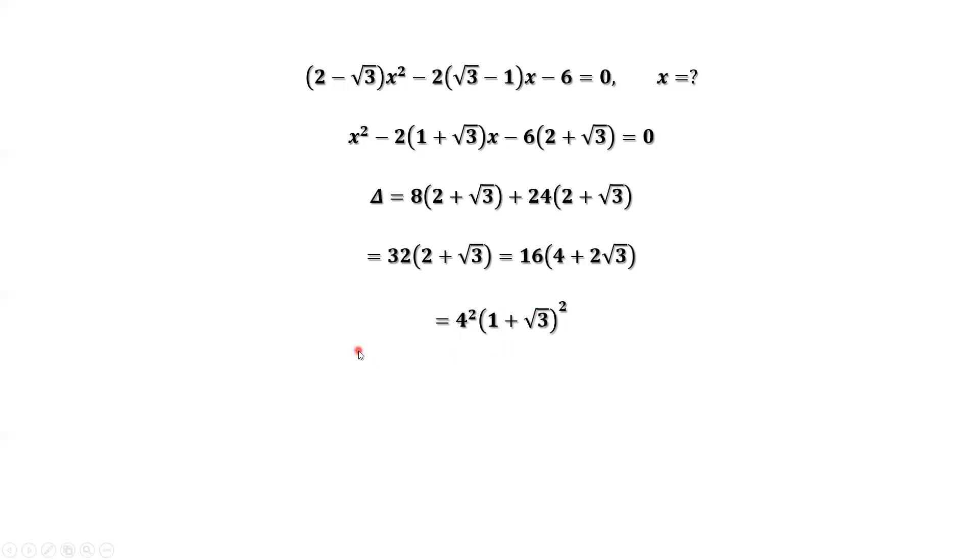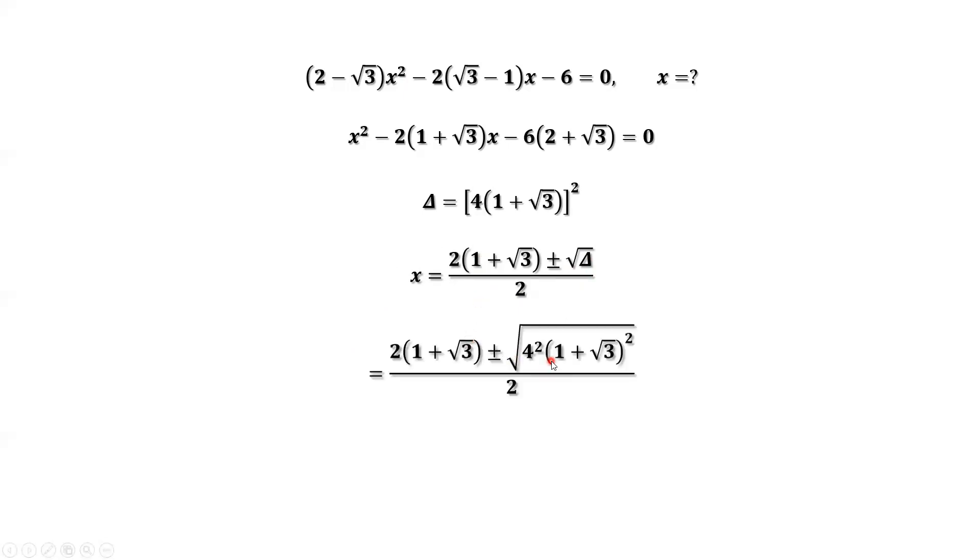Now we are ready to use this result, plug in to the quadratic formula. This is the quadratic formula. Here, that's √(4² × (1 + √3)²). Square and square root, we can cancel them because the inside part is positive.